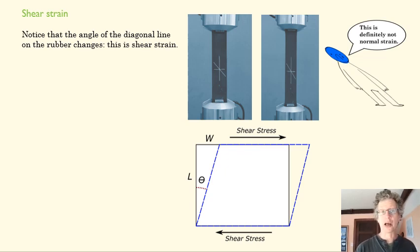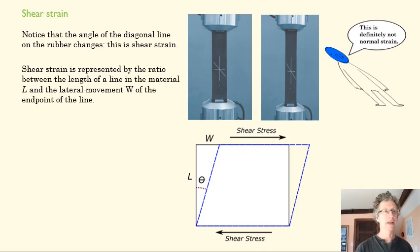We can also talk about shear strain. If we look at this line here, when we stretch this rubber piece, the angle of that line changes slightly. Here, it's at 45 degrees. Here, it might be 46, 47 degrees. That's shear strain, and we measure shear strain by that angle.